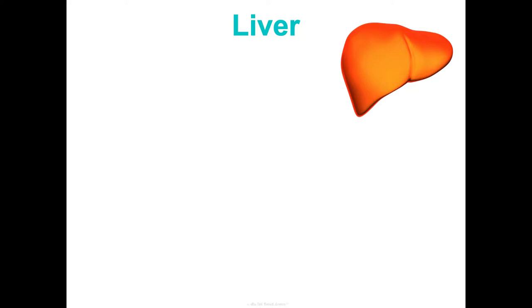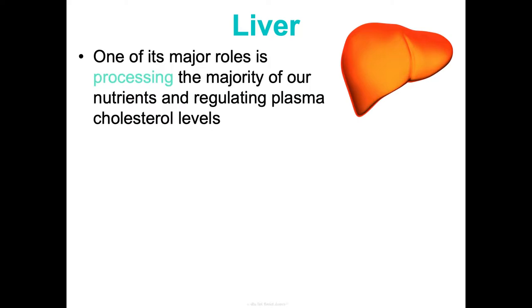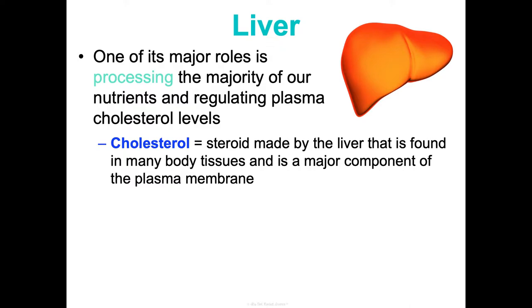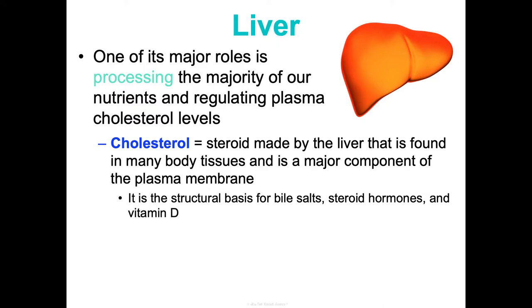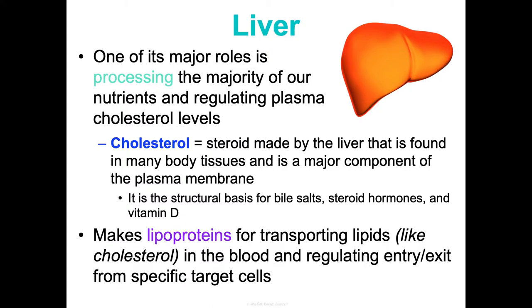Last but not least: the liver, which we discussed with the digestive system. One of its major roles is processing the majority of our nutrients and regulating plasma cholesterol levels. Cholesterol is a steroid made by your liver, found in many body tissues, and is a major component of the plasma membrane. It's also the structural basis for bile salts — important in fat digestion — as well as for steroid hormones discussed in unit three. The liver also makes lipoproteins for transporting lipids like cholesterol in the blood, since blood is mainly water.